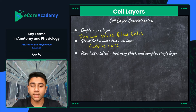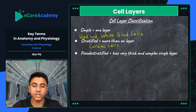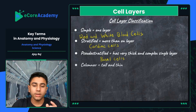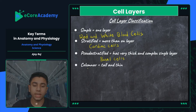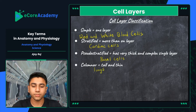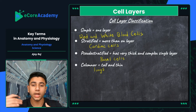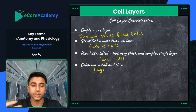Then we have 'pseudostratified,' meaning the cell has very thick and complex structures but is actually a single-layered cell — an example is basal cells located on the outermost layer of your skin, alongside keratinocytes and melanocytes which are more complex. Then we have 'columnar,' which are tall and thin cells located in your lungs. These allow air to pass through in a more concentrated manner, which is why the lungs are so massive — they need to include more of these columnar cells across a wide band.